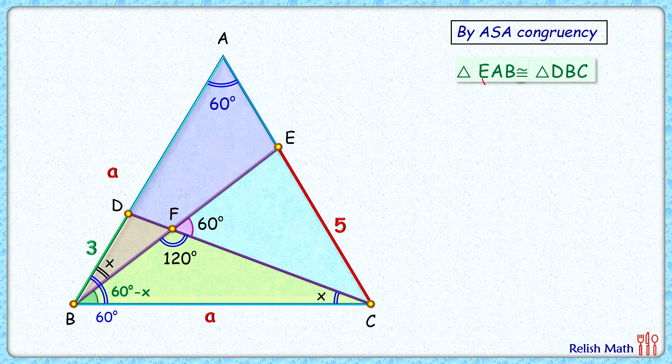EA length will be equal to DB length. But DB length is given as 3 centimeters, so EA length is 3 centimeters.